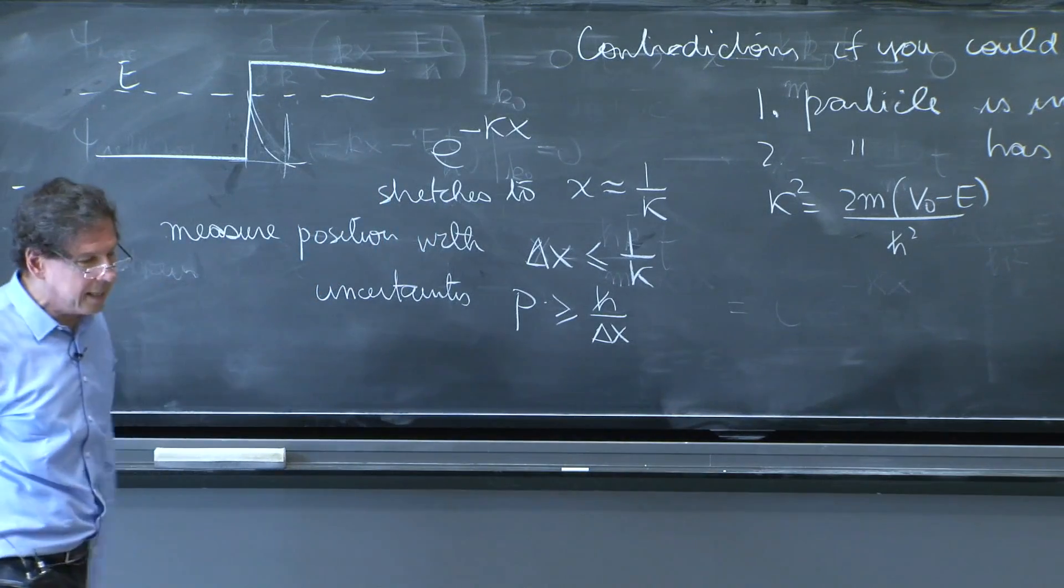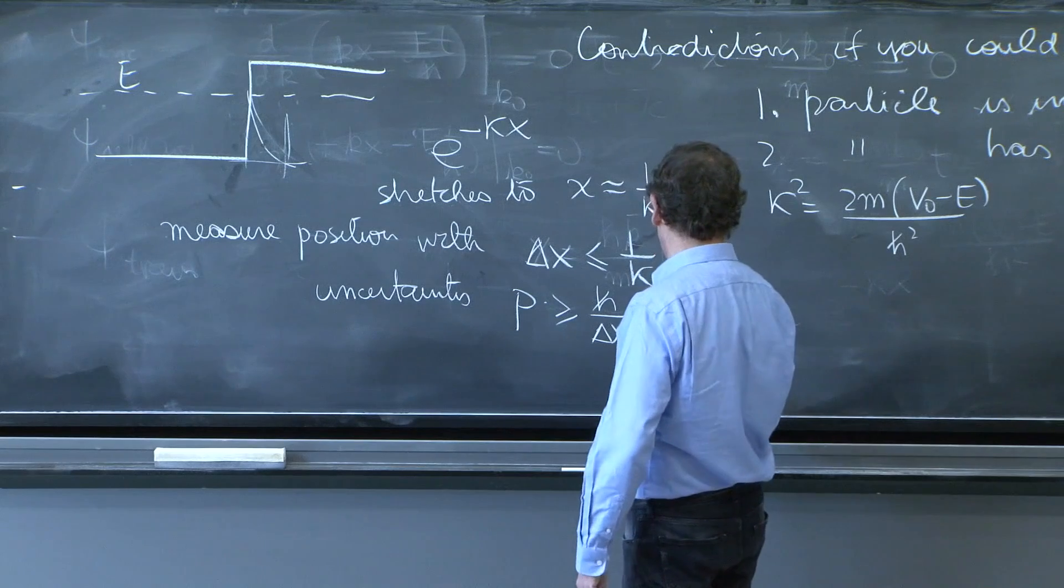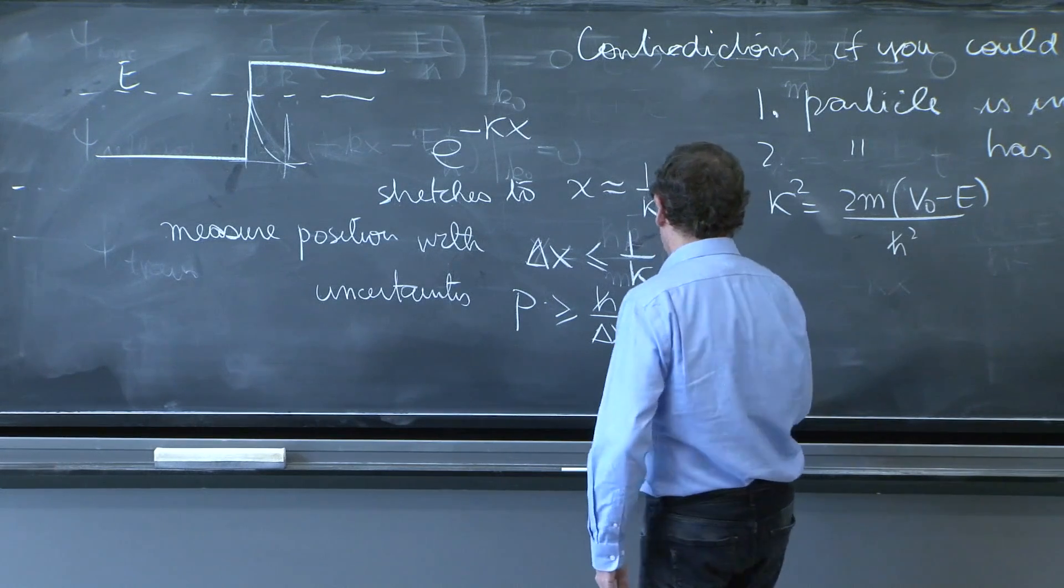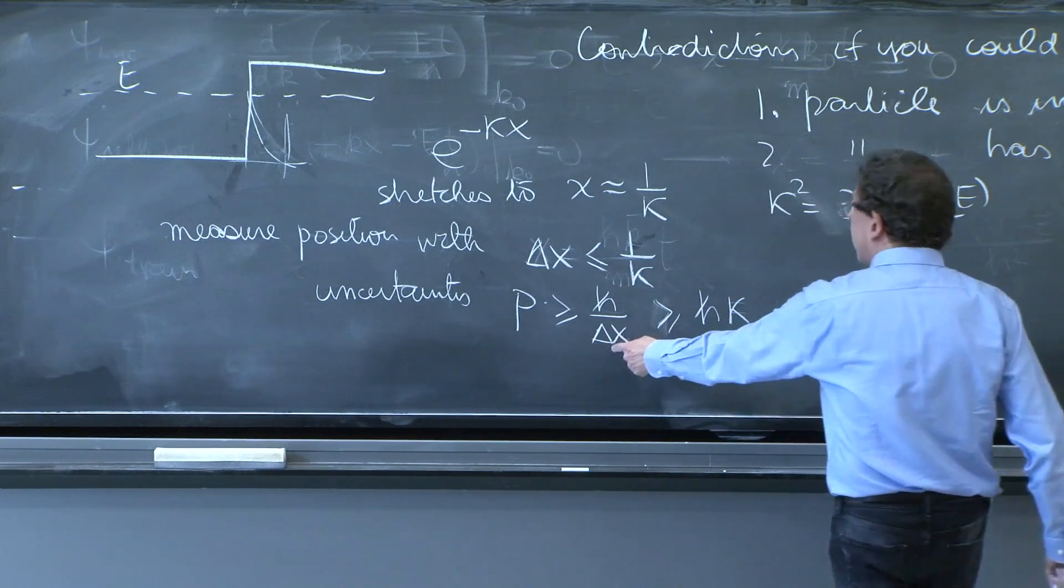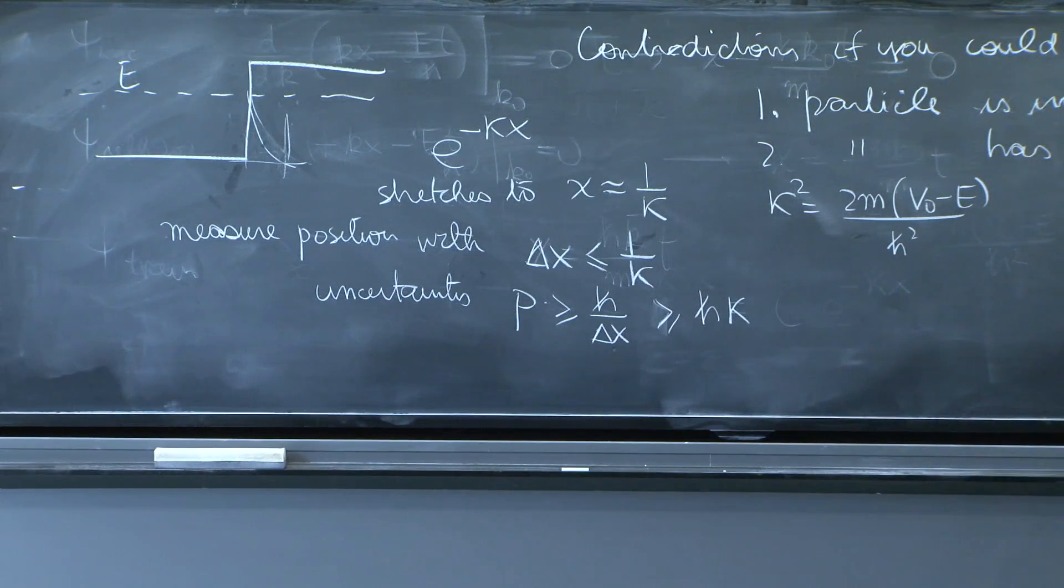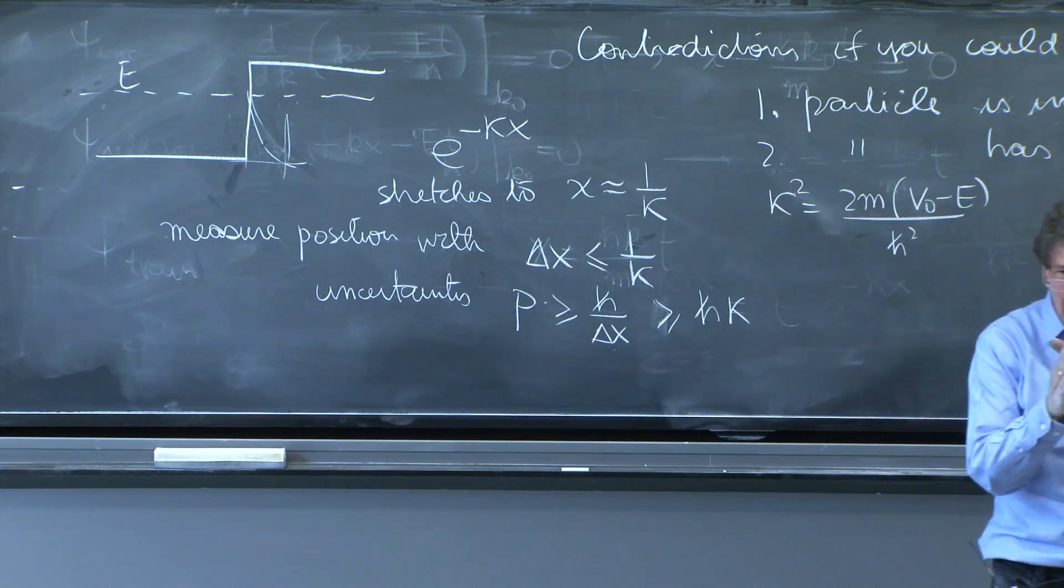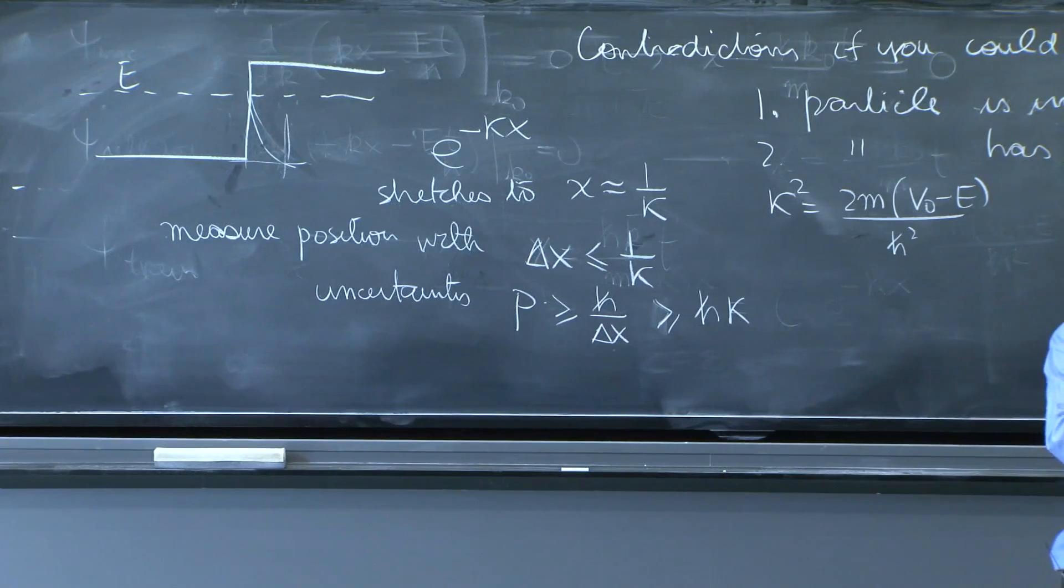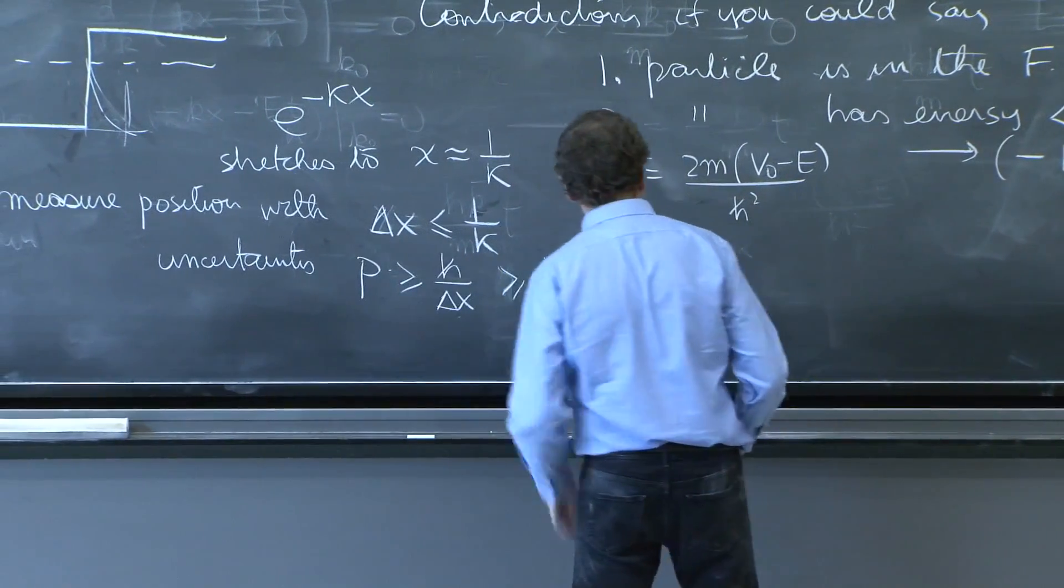So a momentum uncertainty a little bigger than ℏκ. If Δx is less than that, the inequality goes in the same direction. So there's going to be an uncertainty ΔP.